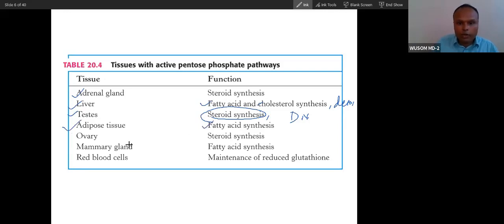Now, adipose tissue - fatty acid synthesis. Ovary - steroid hormone synthesis, because steroid hormone synthesis is a continuously going process. That is why this is the predominant function that is written.